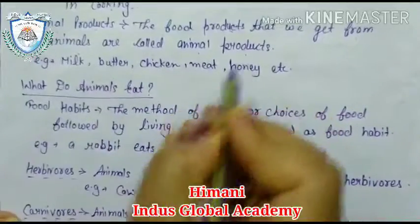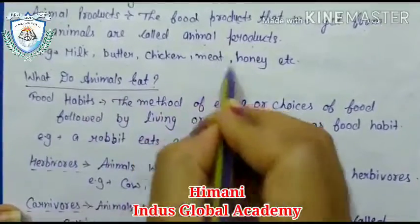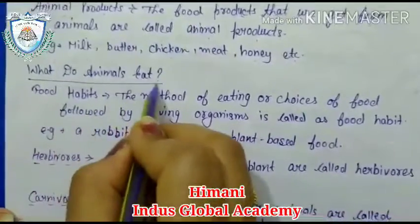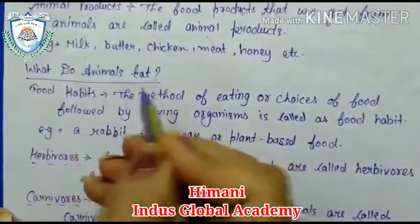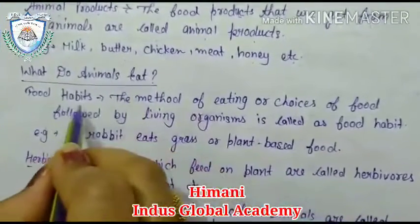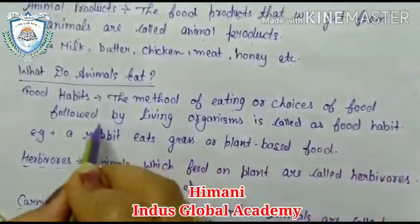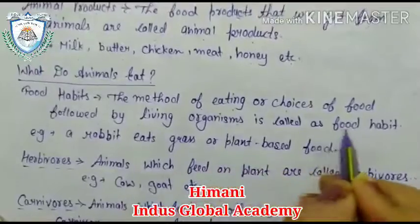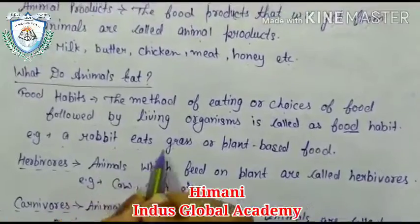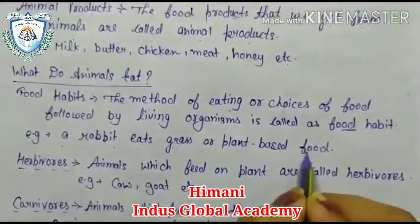Now, animal products — the food products that we get from animals are called animal products. Examples include milk, butter, chicken, meat, and honey. Now, what do animals eat? There are different animals that eat different food. The method of eating or choice of food followed by a living organism is called its food habit. For example, a rabbit eats grass or plant-based food.